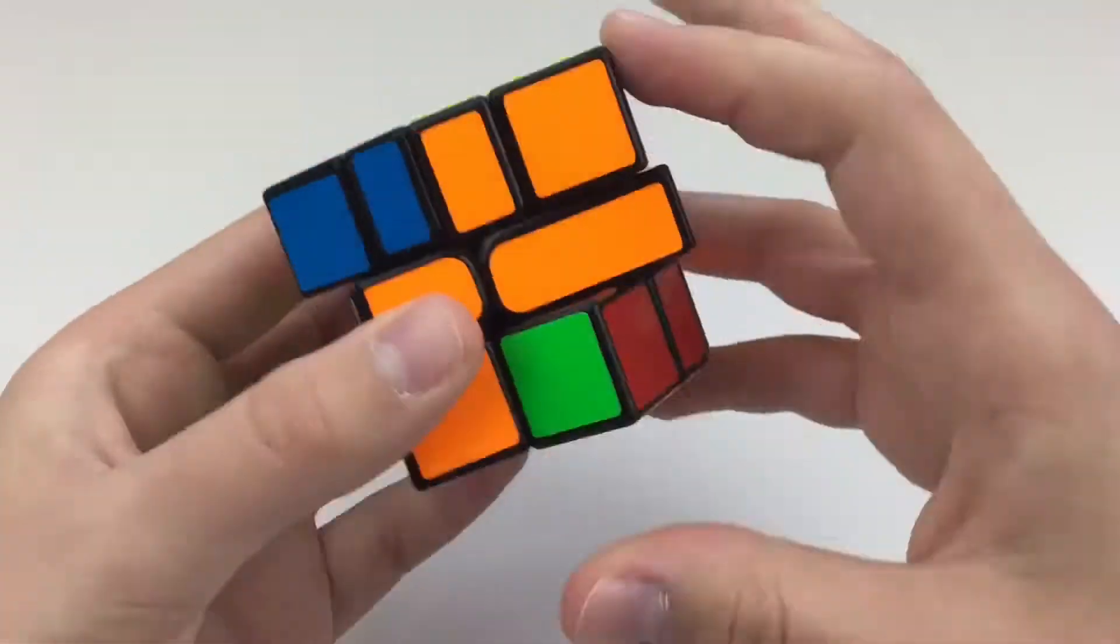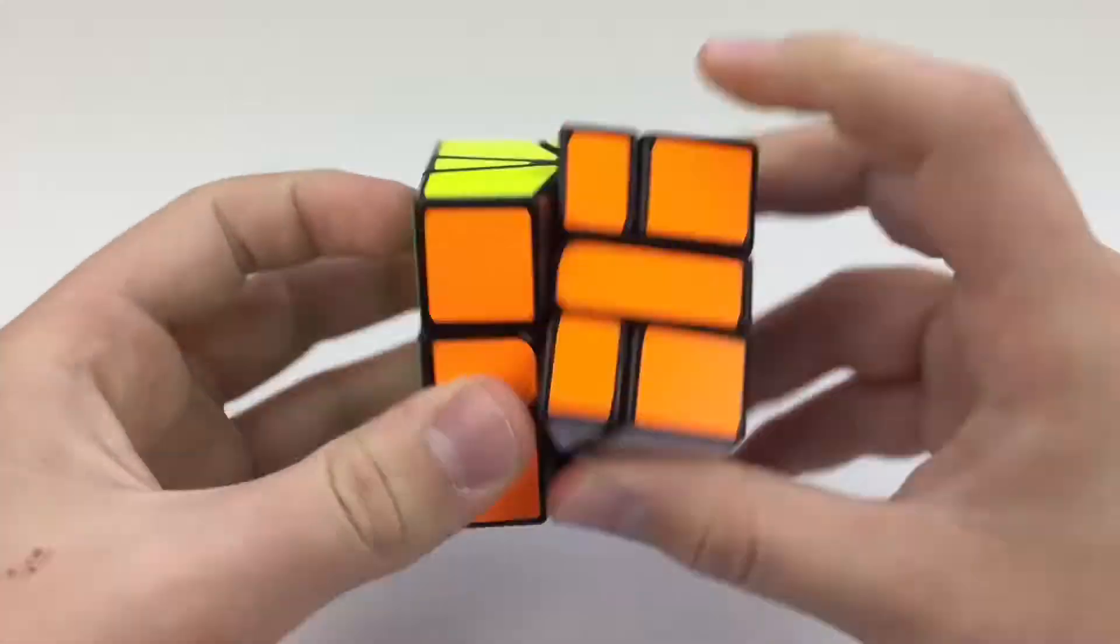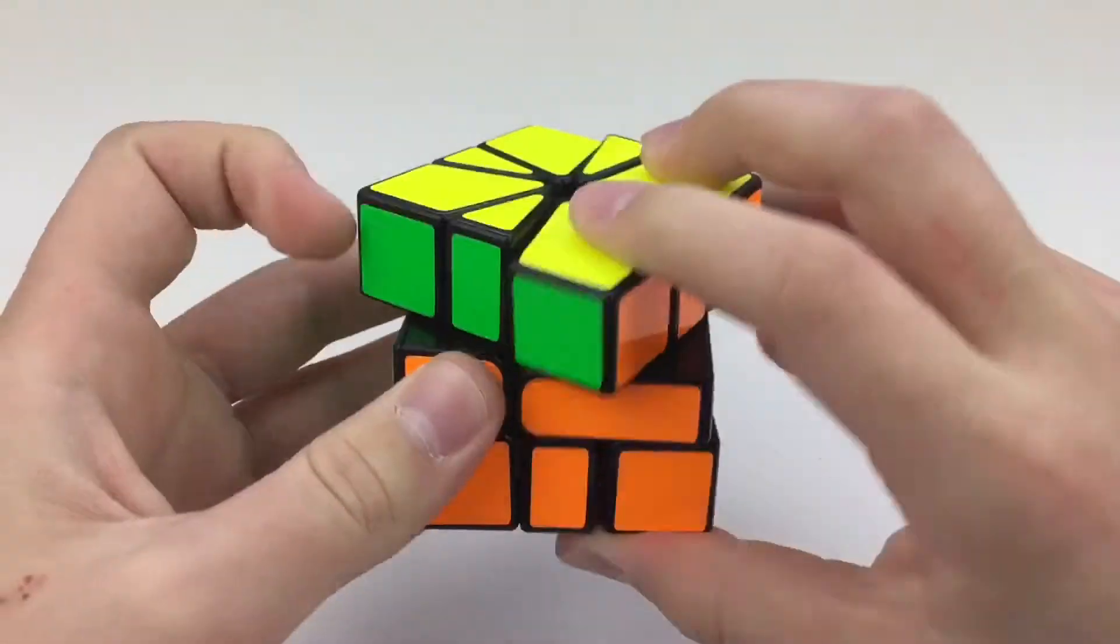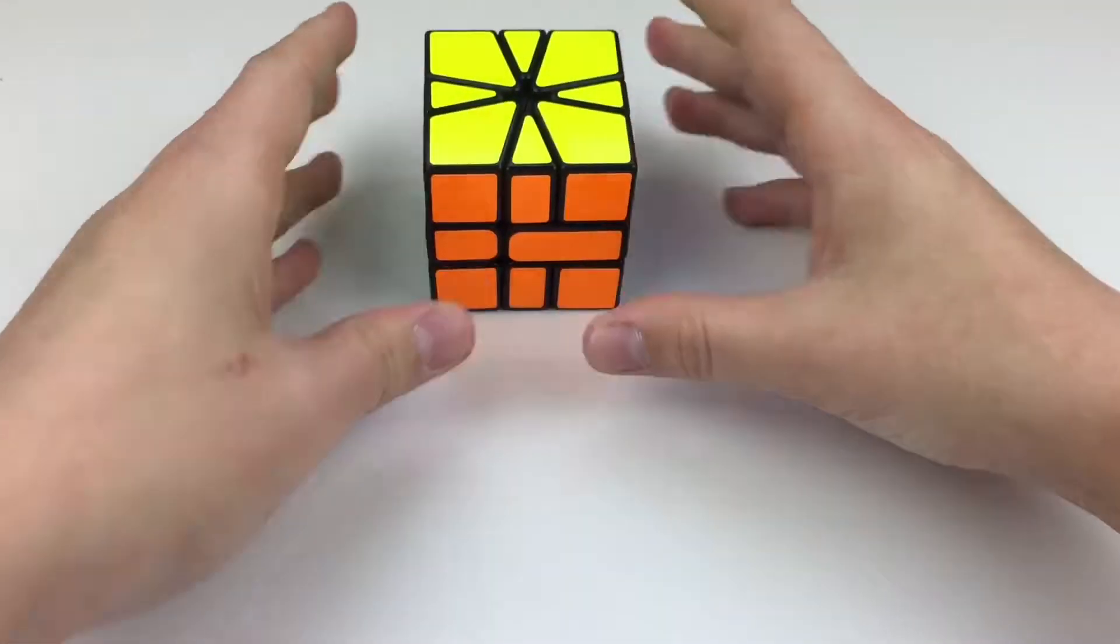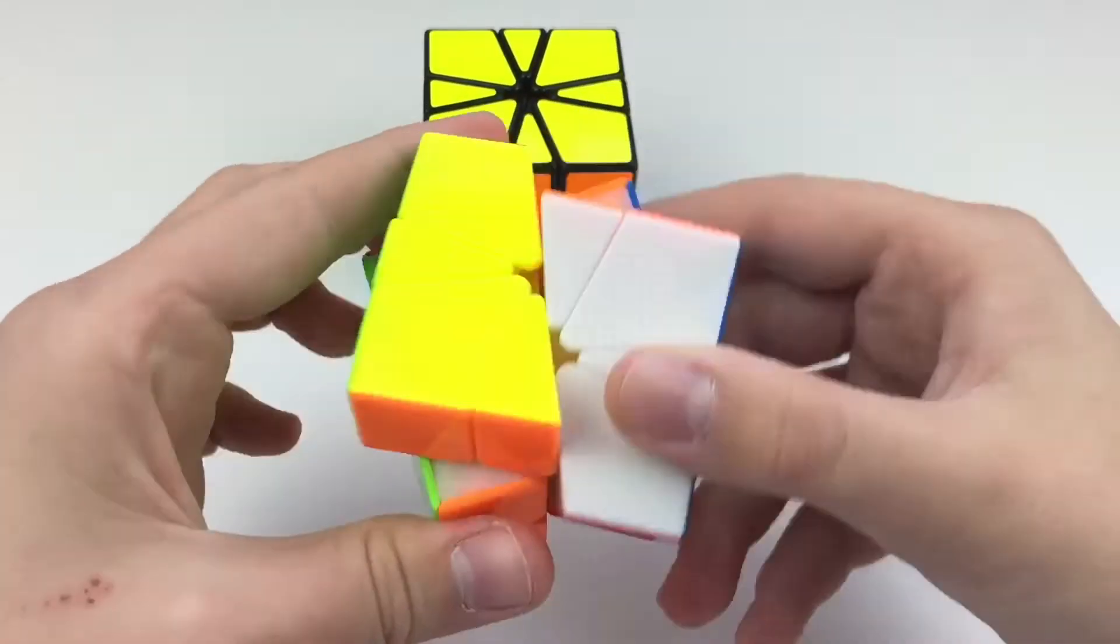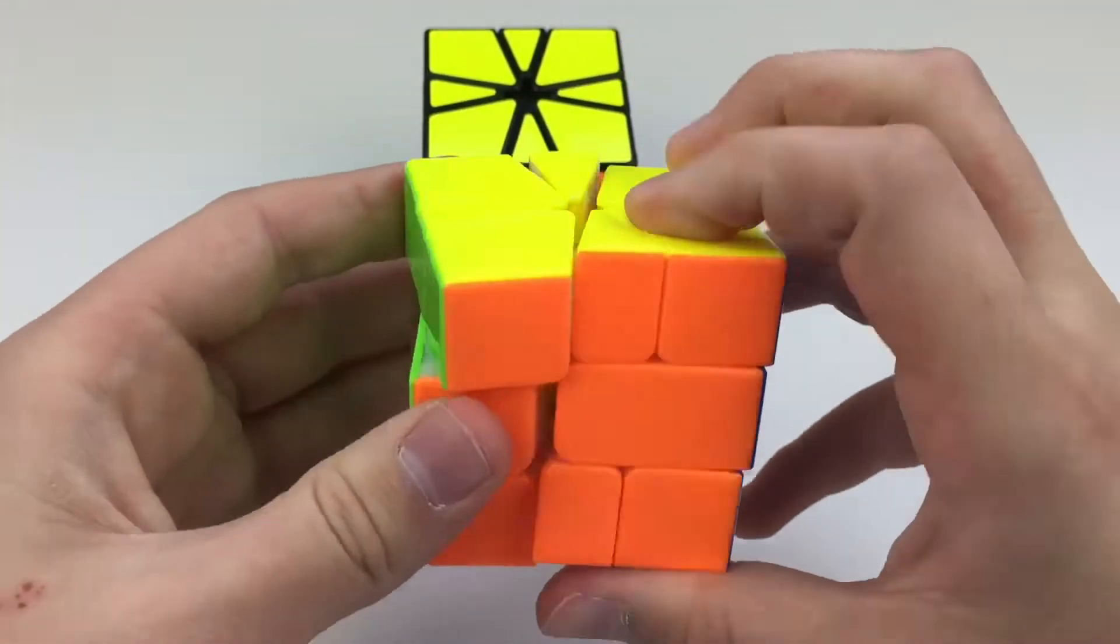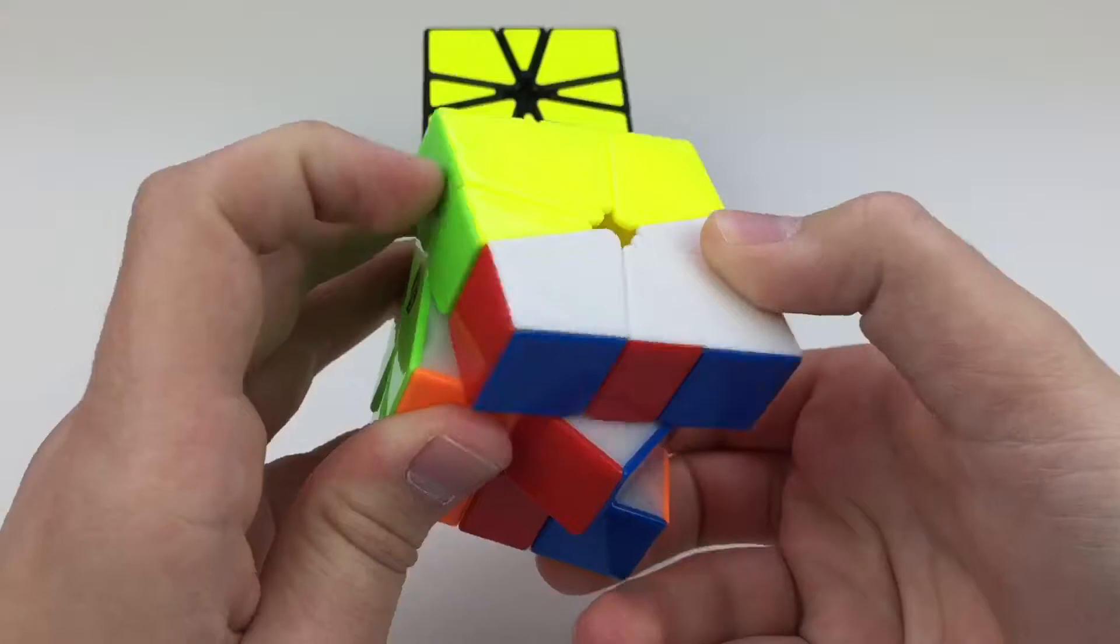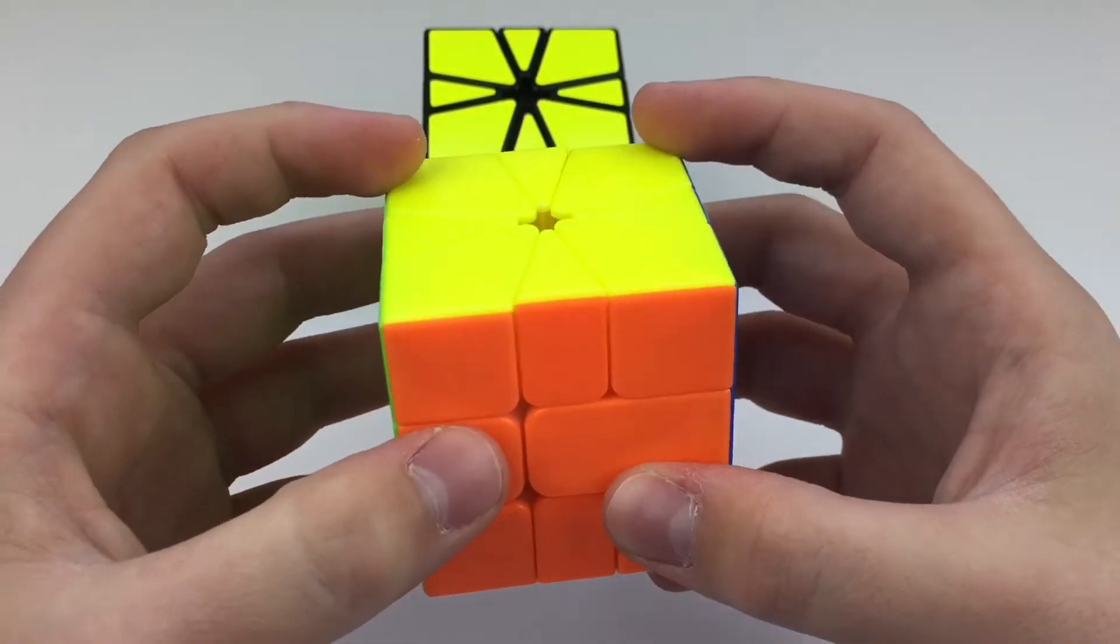And now this cube is very nice. And I really like the overall turning. I think that although it is quite fast, it's not quite as crazily quick as, say, the Volt or something like that. Because you can't adjust the tensioning to make the puzzle quite as loose as you can with some other square ones.